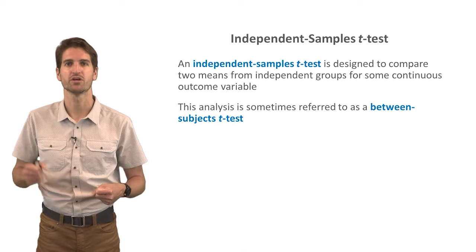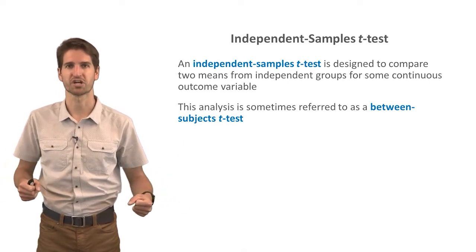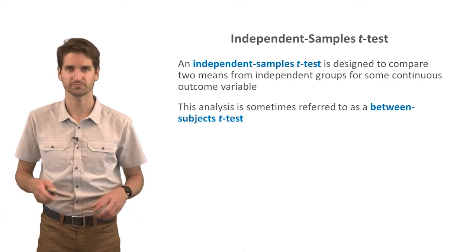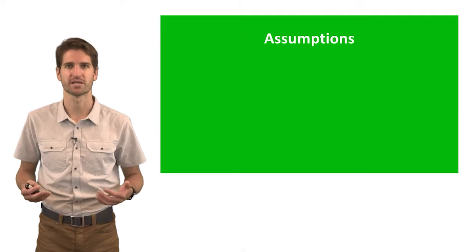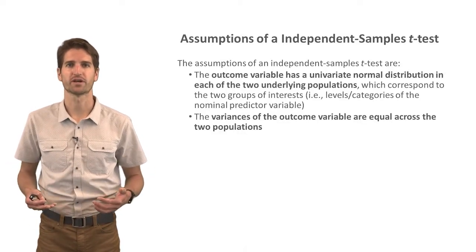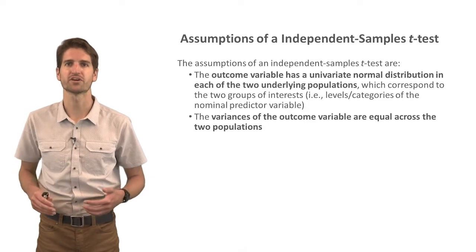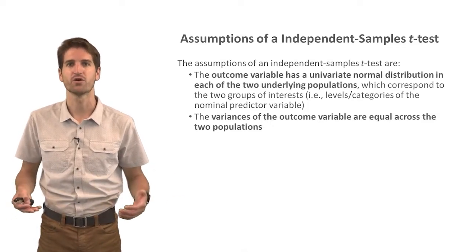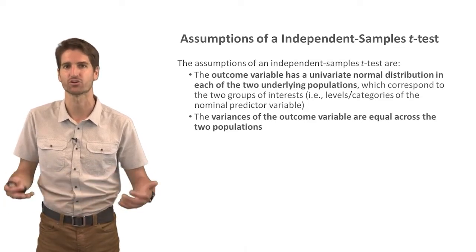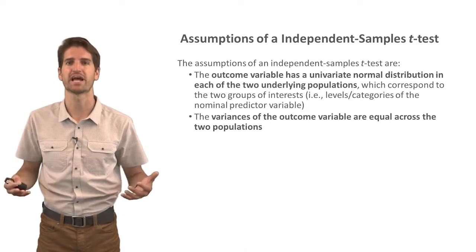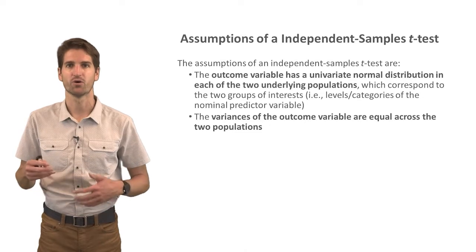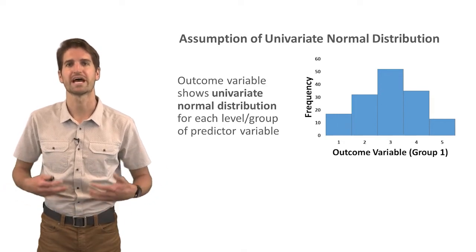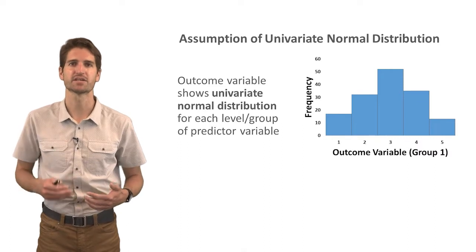When we talk about independent samples, we're talking about two independent groups of people — one group has unique people and the other group has unique people; no one is in both groups. There are really two major statistical assumptions underlying an independent samples t-test. The first is that the outcome variable has a univariate normal distribution in each of the two underlying populations, corresponding to the two groups of interest. The second is that the variances of the outcome variable are equal across the two populations.